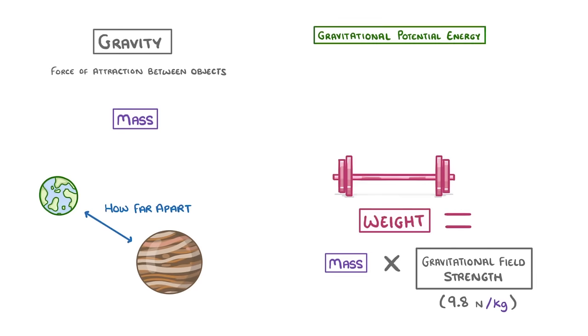And finally, that gravitational potential energy is denoted by Ep and equals mass times gravitational field strength times height.